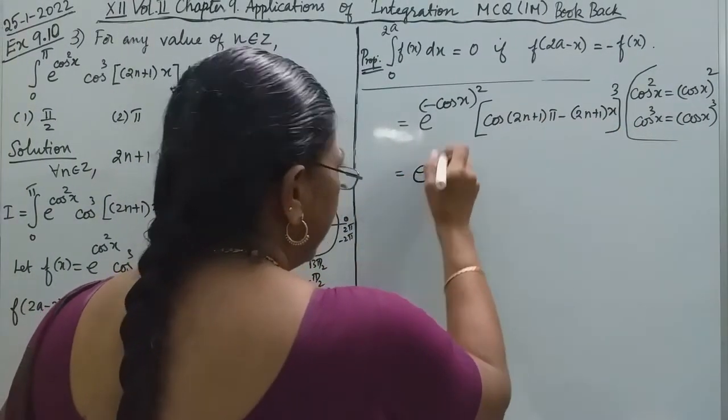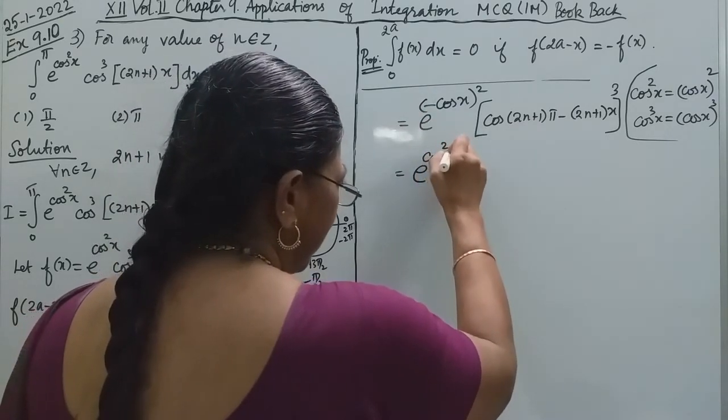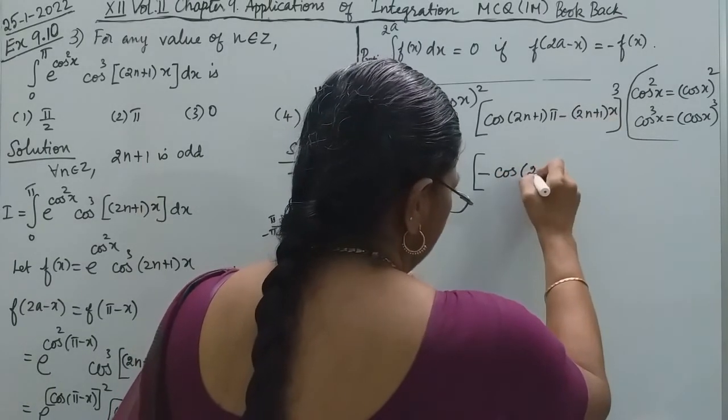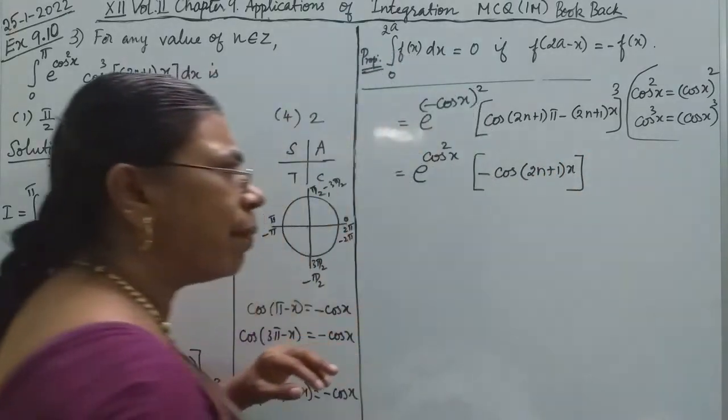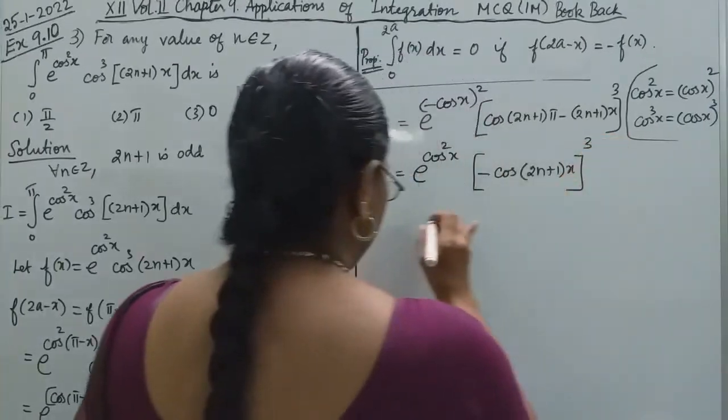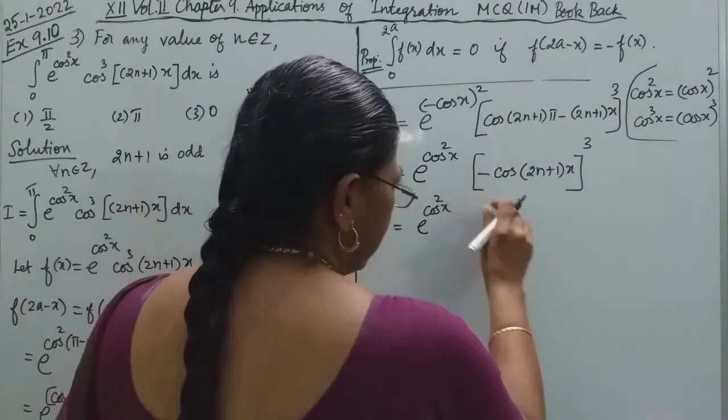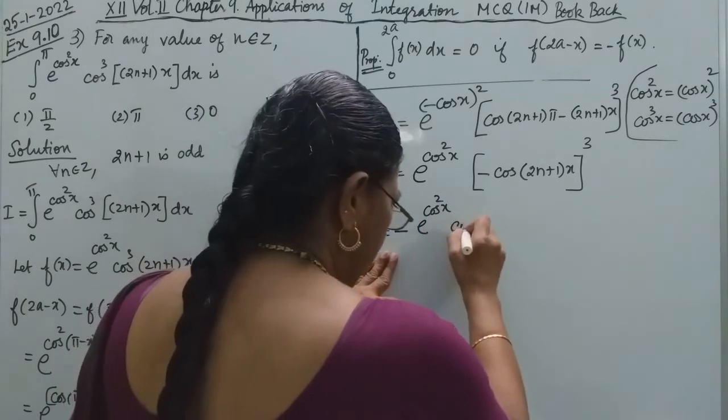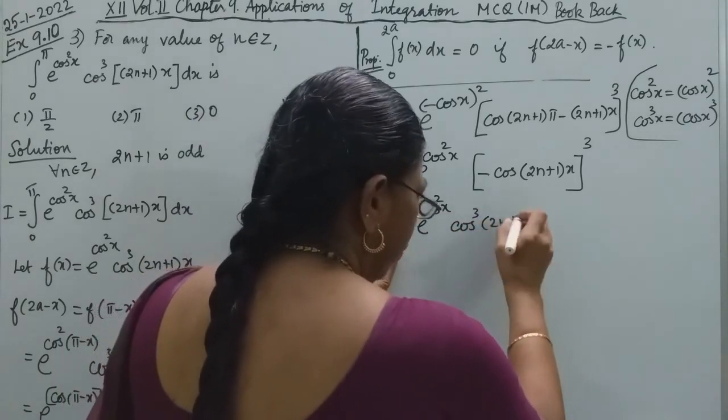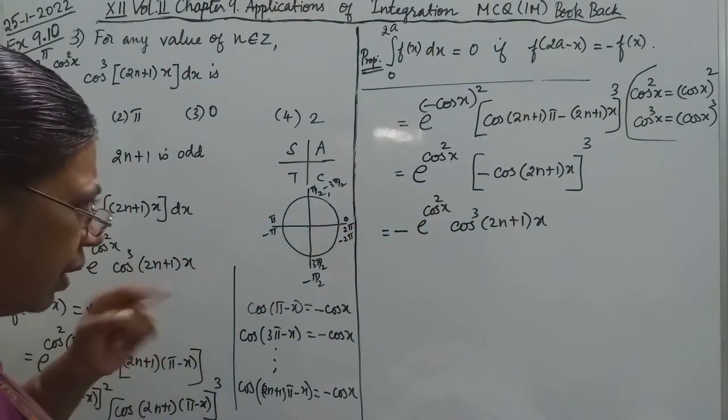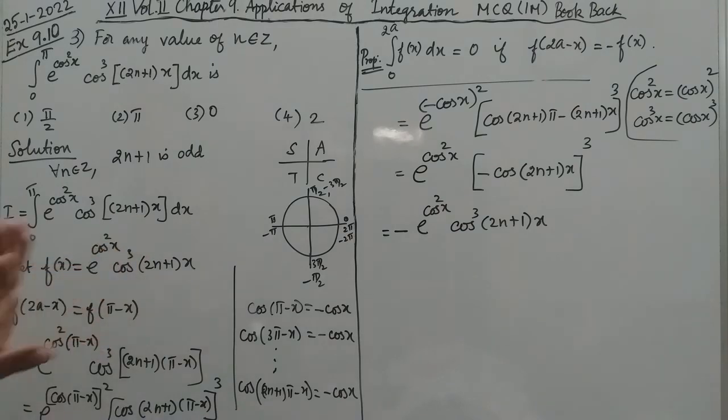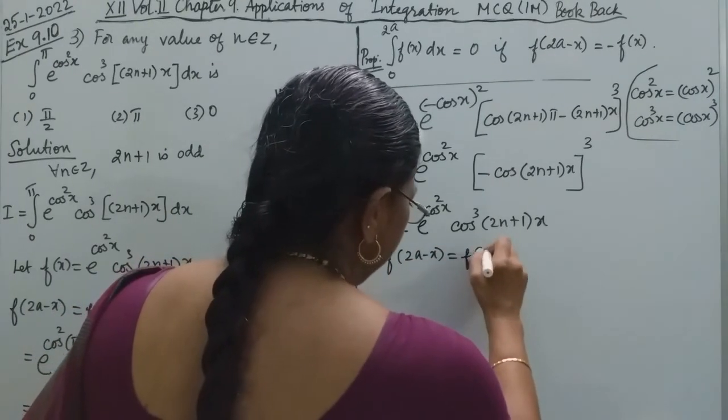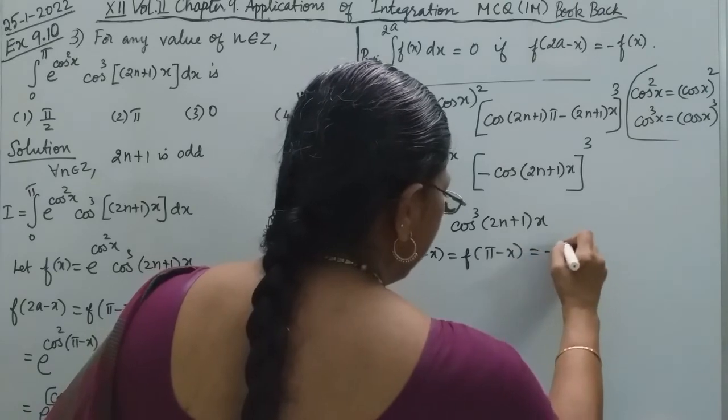cos of odd multiples of π minus x is -cos(x). In square of this, (-cos(x))² = cos²(x). Now (-cos(2n+1)x)³, the power of 3 with minus gives e^(cos²x) times [-cos(2n+1)x]³. This is actually f(x) with a negative sign attached. So f(π-x) = -f(x).